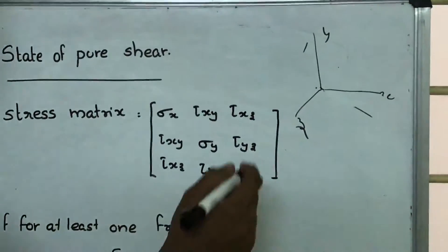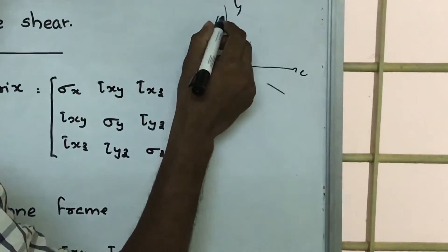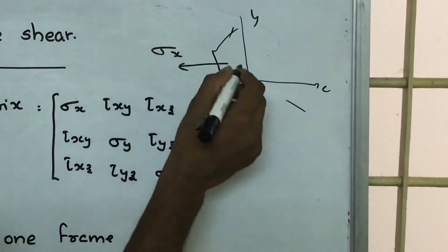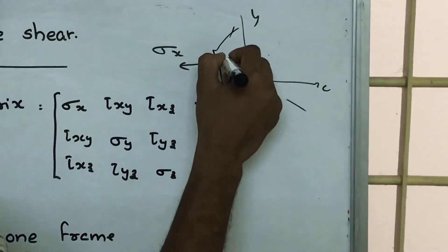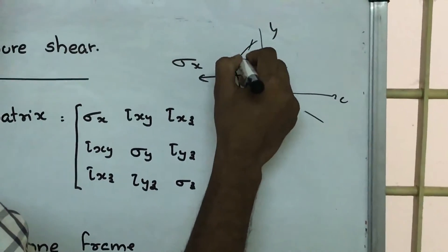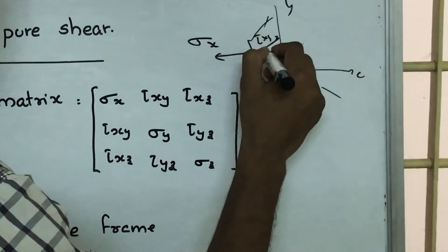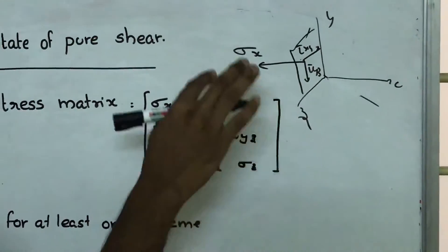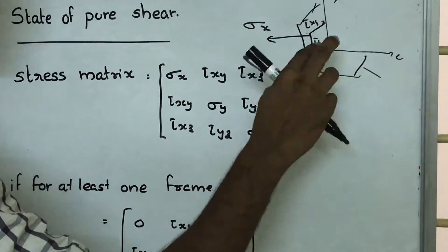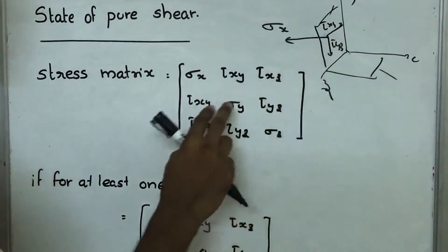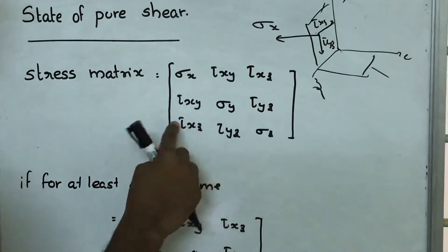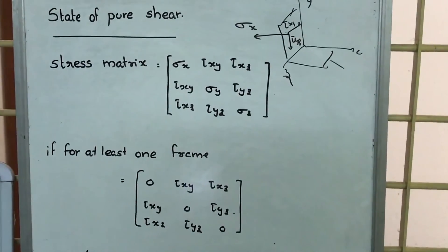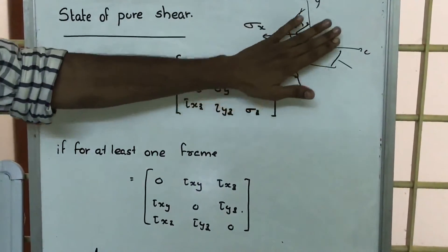For this particular first plane, there will be a direct stress sigma x, and then there will be shear stresses tau xz and tau yz — these three are represented here. Similarly, for each plane there will be a direct stress and two shear stresses, and that is represented in the stress matrix as well.